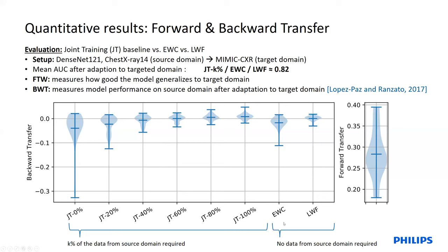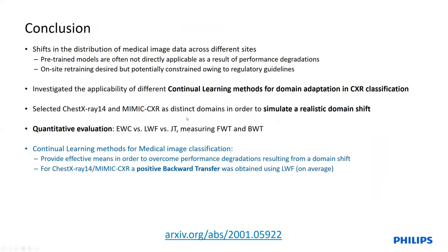Among our continual learning methods, LWF performed better than EWC. Notably, LWF on average obtained a slightly positive backward transfer even without any data from the source domain — a very interesting and nice result. Its performance is roughly comparable to joint training using 60% of the source domain data.